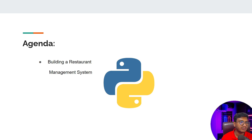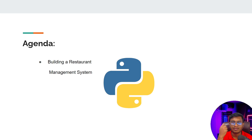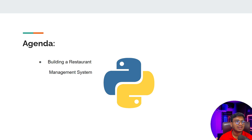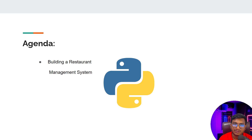We'll be implementing this restaurant management system. In a restaurant you can open up the menu, choose different food items, and order. It will show you the price of that particular food. We'll be implementing a similar kind of application. I'm not going to implement a complete end-to-end application with user interface — we'll only be implementing it with a Python program.